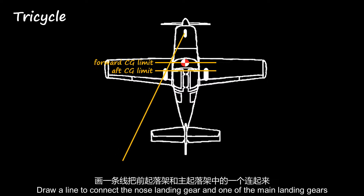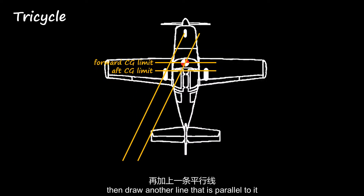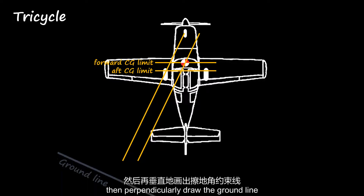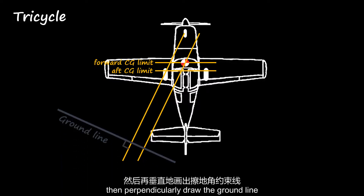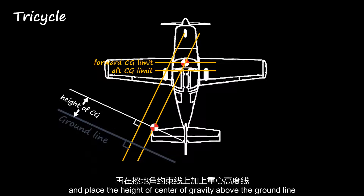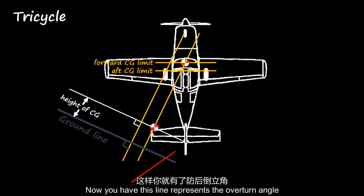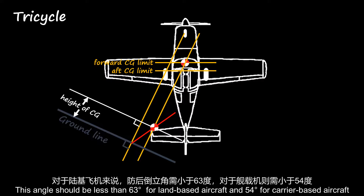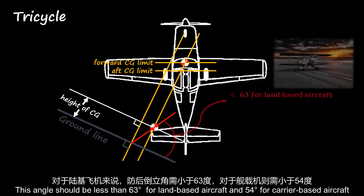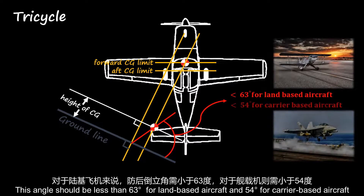Draw a line connecting the nose landing gear and one of the main landing gears, then draw another line parallel to it. Perpendicularly draw the ground line and place the height of the center of gravity above it. This line represents the overturn angle, which should be less than 63 degrees for land-based aircraft and 54 degrees for carrier-based aircraft.